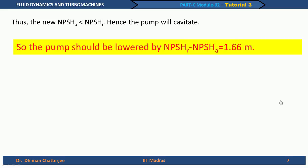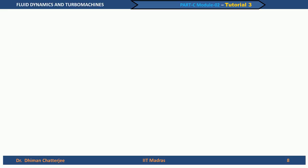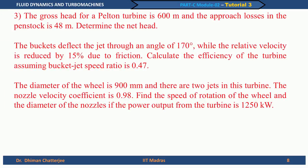I hope you now understand how to use NPSH with pump data to determine whether the pump will cavitate or not. More problems along these lines will be given in the tutorial. We now move to the third problem on hydro-turbo machines, which is about a Pelton turbine.